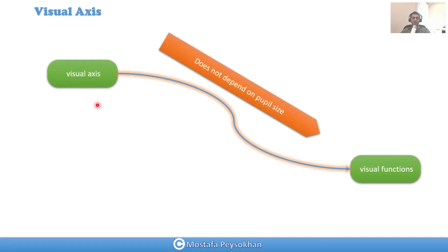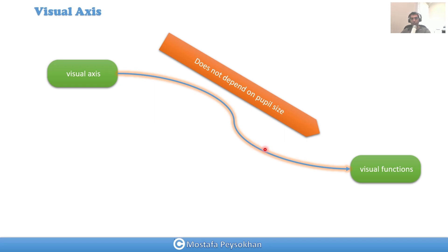Now let's talk about why this axis is very important. The visual axis is important for visual function because it doesn't depend on the pupil size. The pupil size can change, and for the line of sight, when the pupil size changes, the center is moving. But for the visual axis, it's passing through the nodal point and is independent of the pupil size. That's an important aspect of the visual axis.